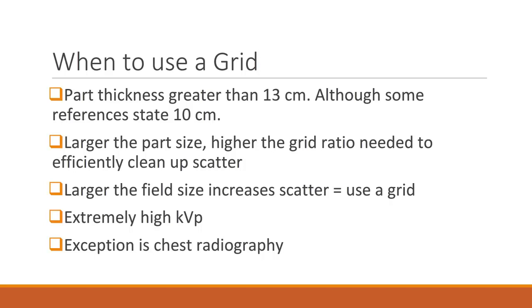Another factor in grid utilization is using very high kVp settings. Technologists should know that high kVp paired with increased tissue will result in increased scatter reaching the IR, and a grid is then needed. The exception to this rule is the chest, due to the large amount of space filled with air within the lungs. However, be aware that improper centering and collimation is even more detrimental when radiographing the chest without a grid. Inclusion of arm tissue and abdominal tissue is counterproductive and will cover the image with scatter fog.